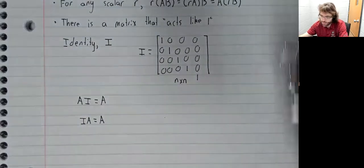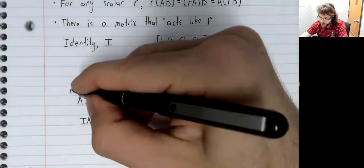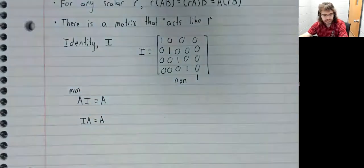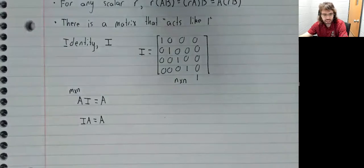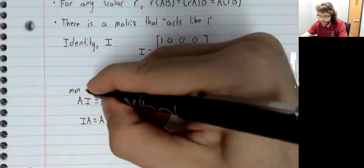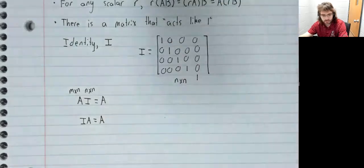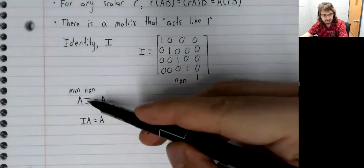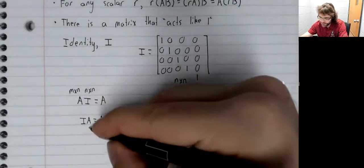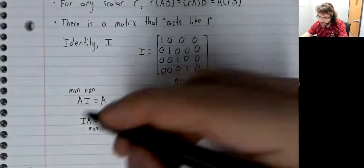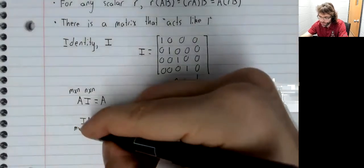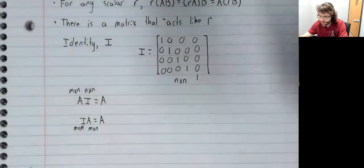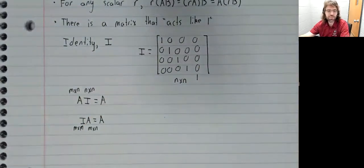For now, just a quick note. If A is M by N and the identity matrix is square, then for this multiplication to be defined, this identity matrix is N by N. Down here for our dimensions to match, the identity matrix has to be M by M.